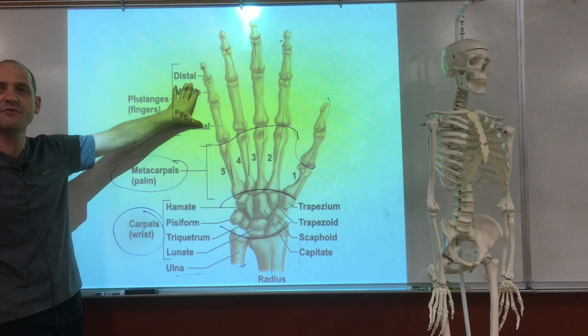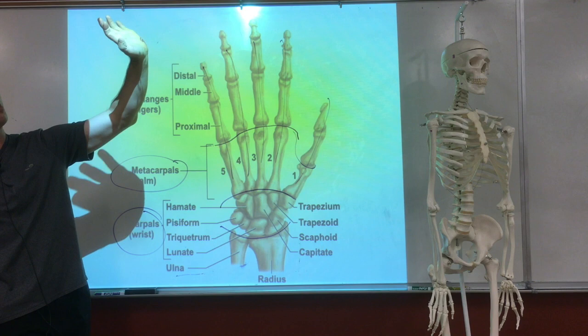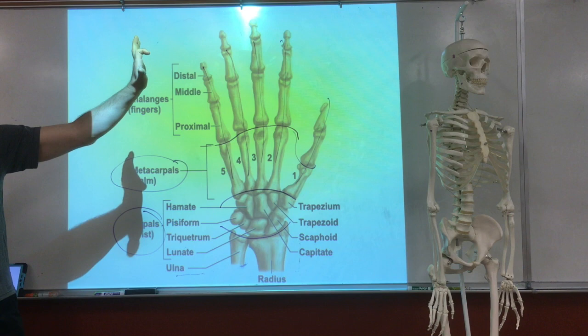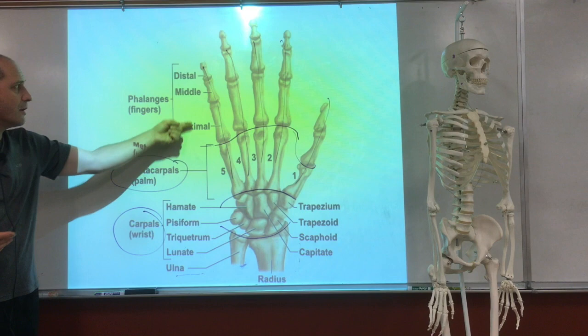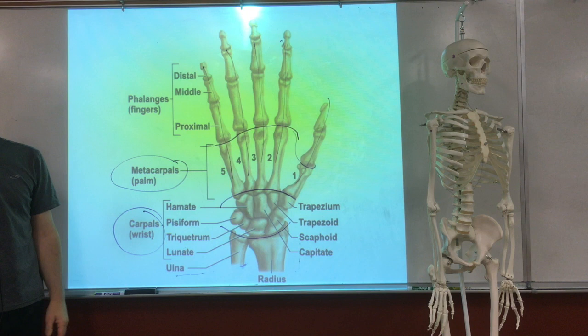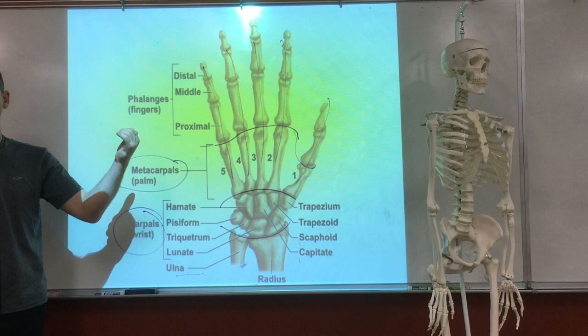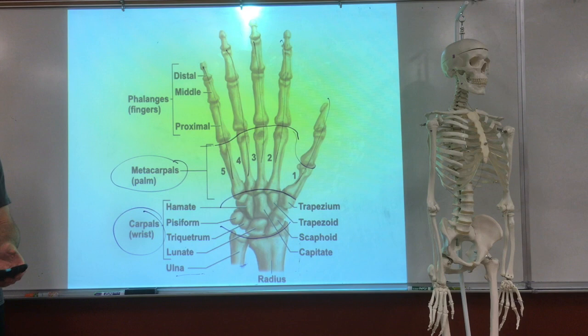When we get to the phalanges — these are the fingers. The thumb has two bones in it, you can only bend one joint. In the fingers you can bend two joints — you have three bones. When we have three, we call the one closest to the web of the hand the proximal, the middle, and the distal. In the thumb we just have a proximal and the distal — no middle. The same architecture is true for the foot.